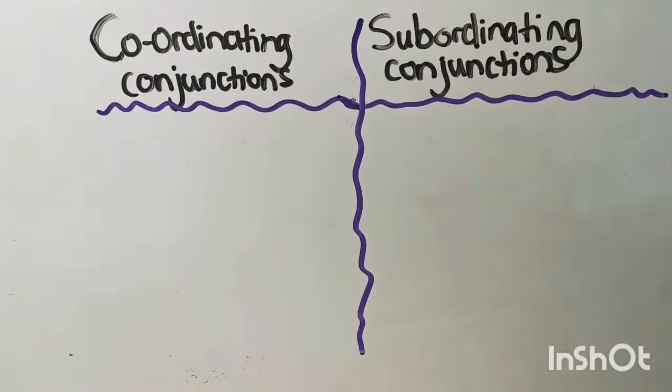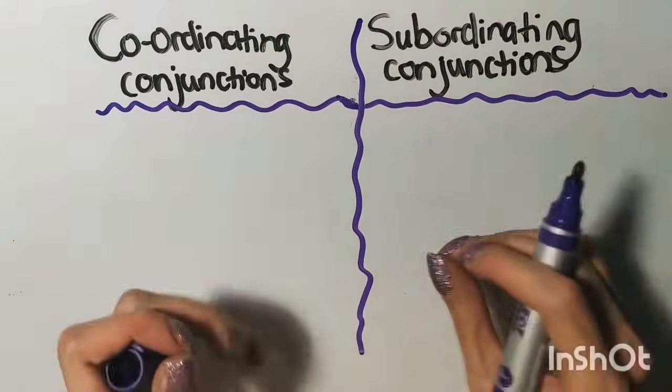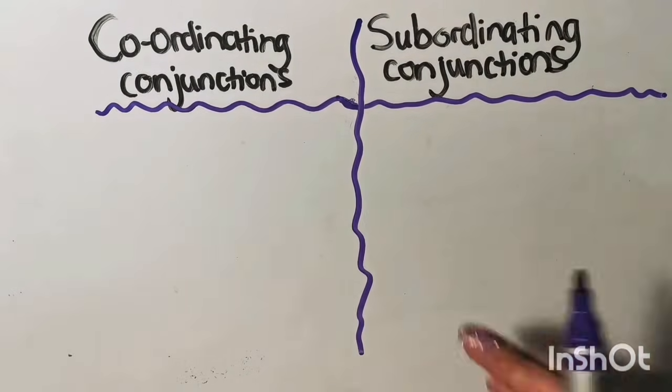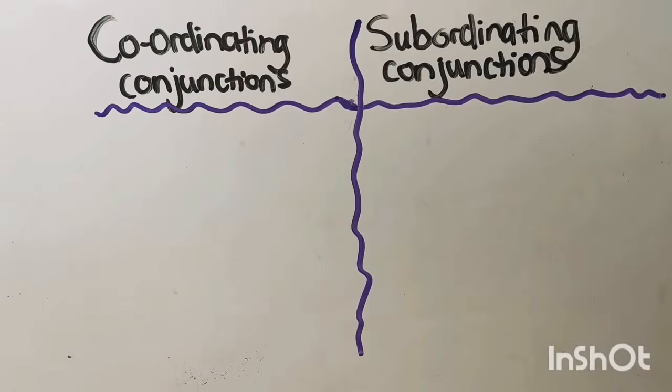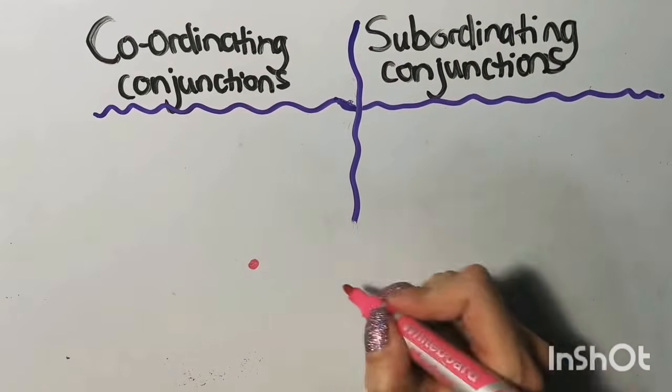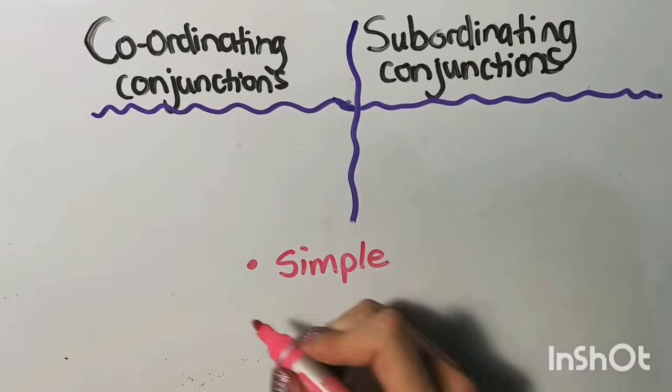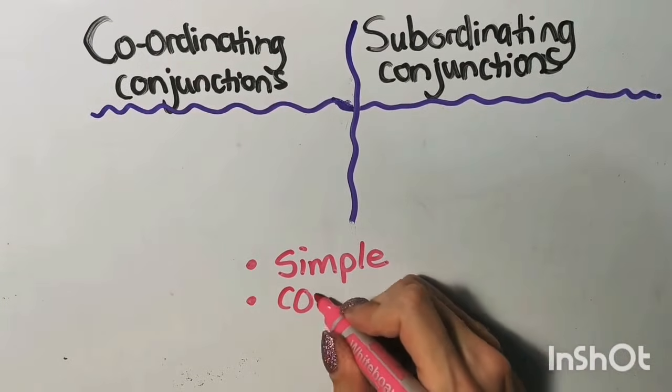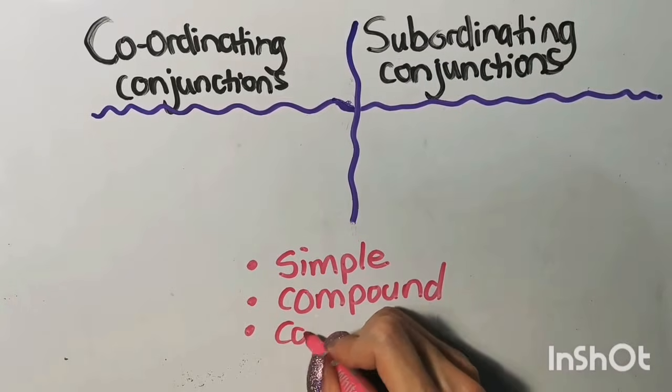Now, let's compare coordinating conjunctions and subordinating conjunctions to see what type of sentences they form. It is actually very easy because you get three types of sentences. The three types of sentences you get are simple sentences, compound sentences, and complex sentences.